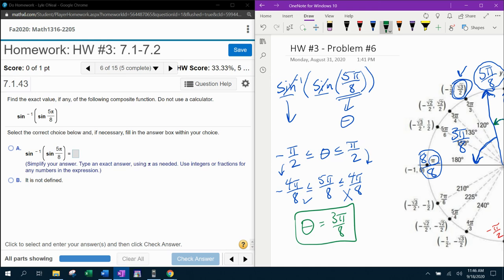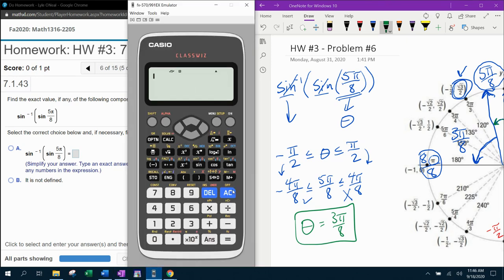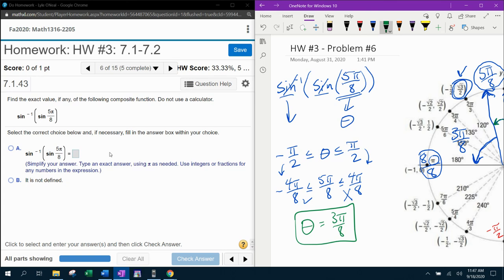That's a long explanation. Let's see if the calculator verifies what I said. We're going to input the inverse sine of the sine of 5π/8. We're hoping that it gives us an answer of 3π/8, which it does. So we know that answer is now correct.